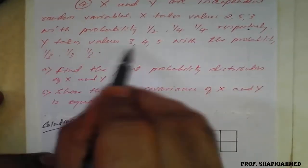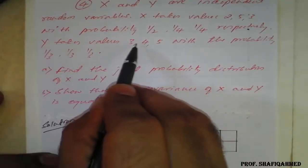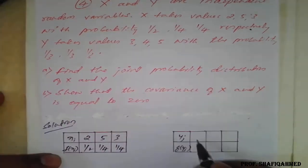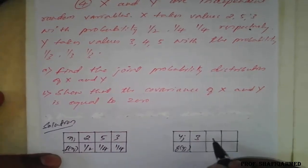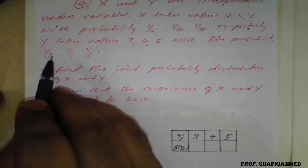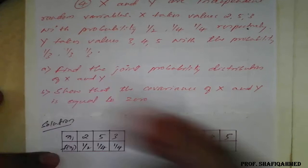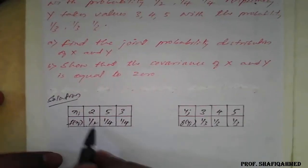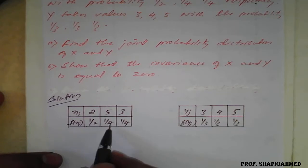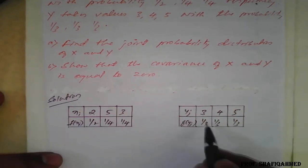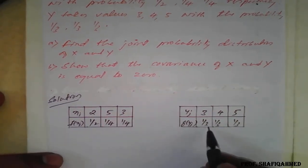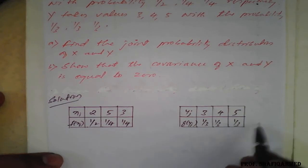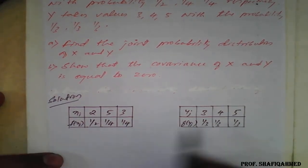Similarly, they have given the values of Y also. Y takes the values 3, 4, 5 and the respective probabilities are 1/3, 1/3, 1/3. You can check: 1/2 + 1/4 + 1/4 = 1, and 1/3 + 1/3 + 1/3 = 1. So this satisfies the probability table.